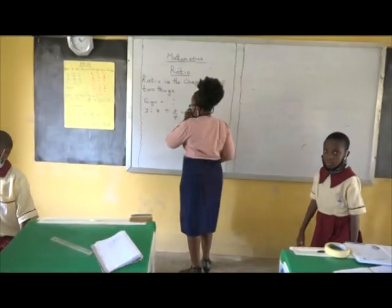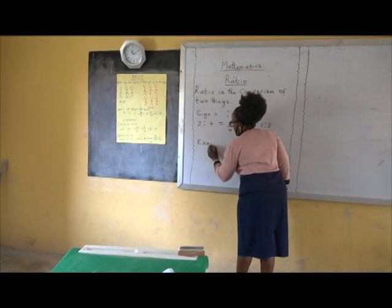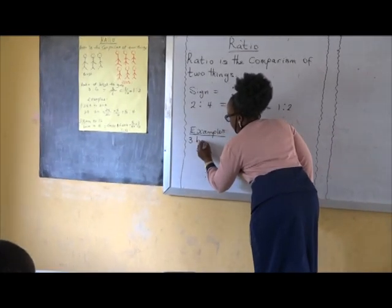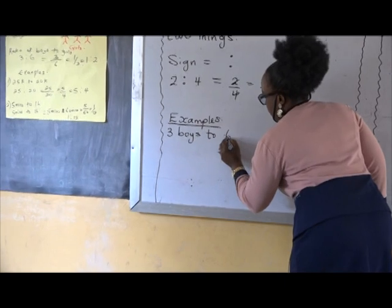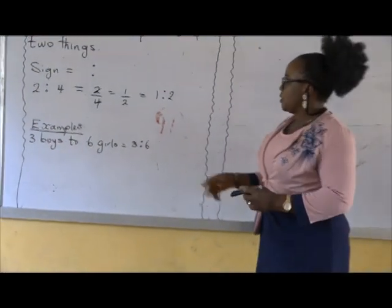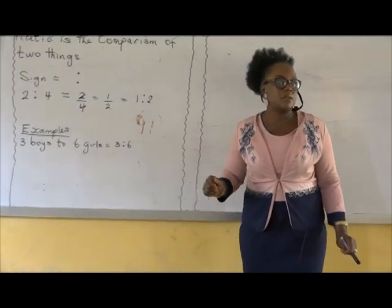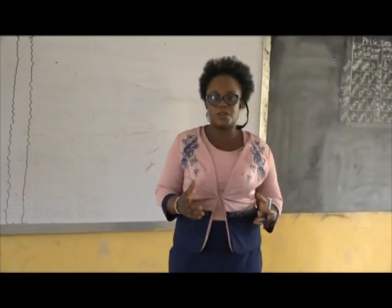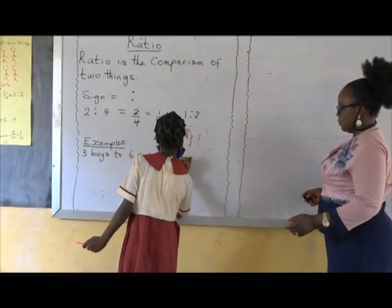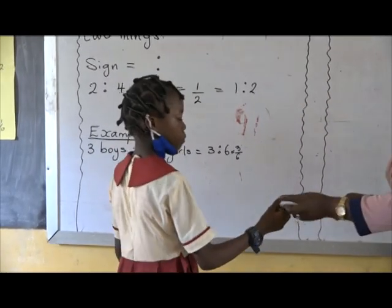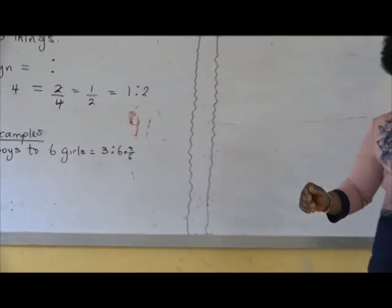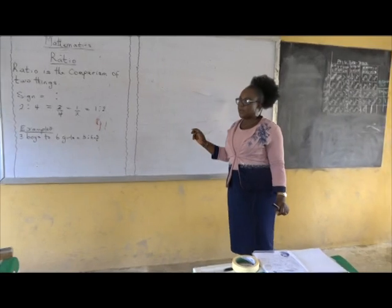Three boys to six girls — we have three ratio six. Now we want to write it as a fraction. Orelua, come and write it as a fraction. A round of applause for her. We have three over six. Now we want to reduce that three over six — we want to write it in simplest form.